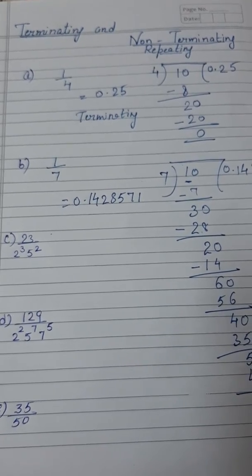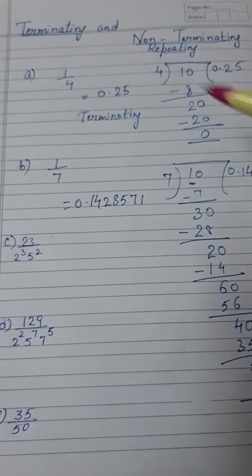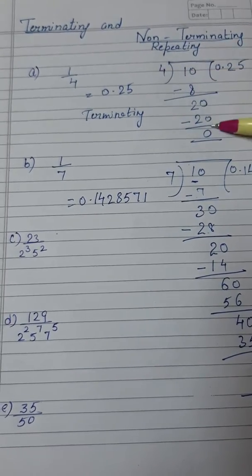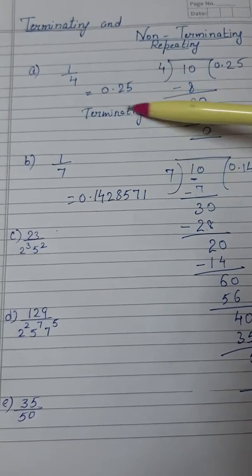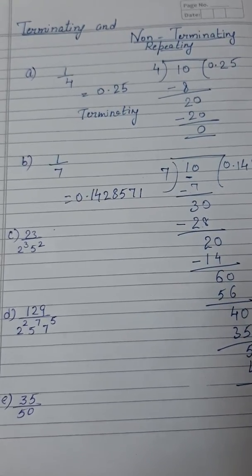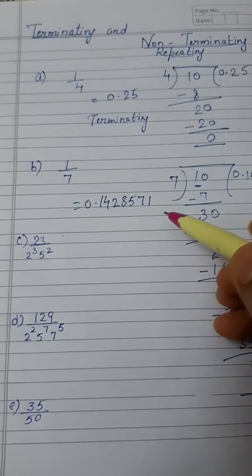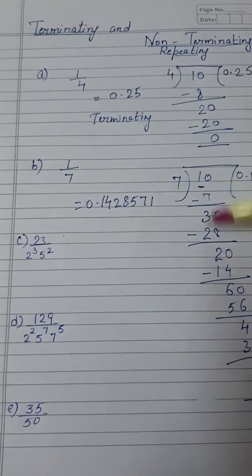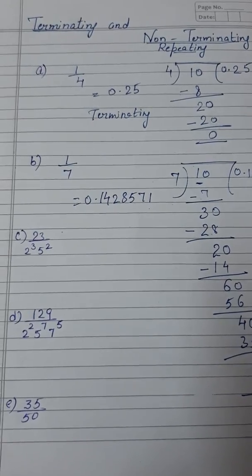Now suppose I am going to tell you that number 1 by 4, so 1 by 4 we divide and check if it is terminated or not. I am going to tell you that number 1 by 7 is non-terminating and repeating. So we divide and check. Without division can we check?